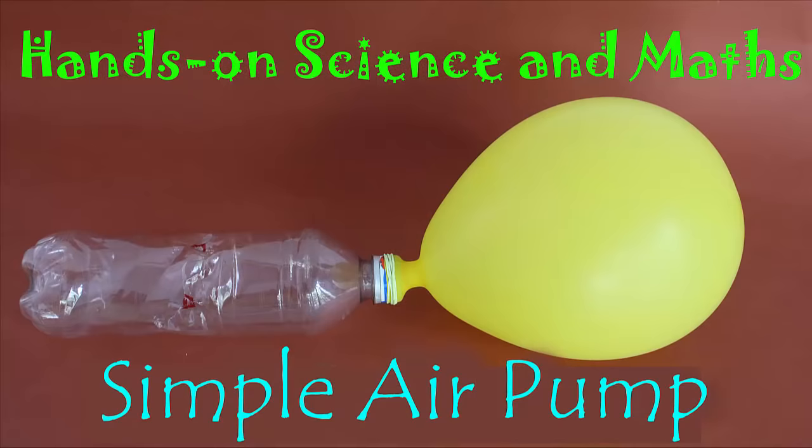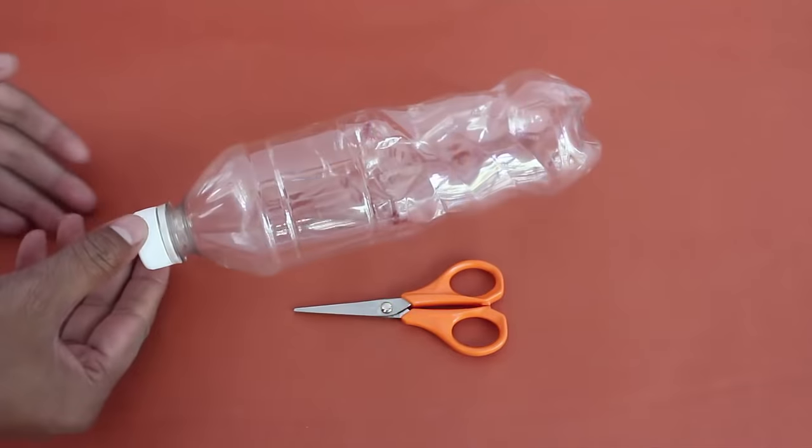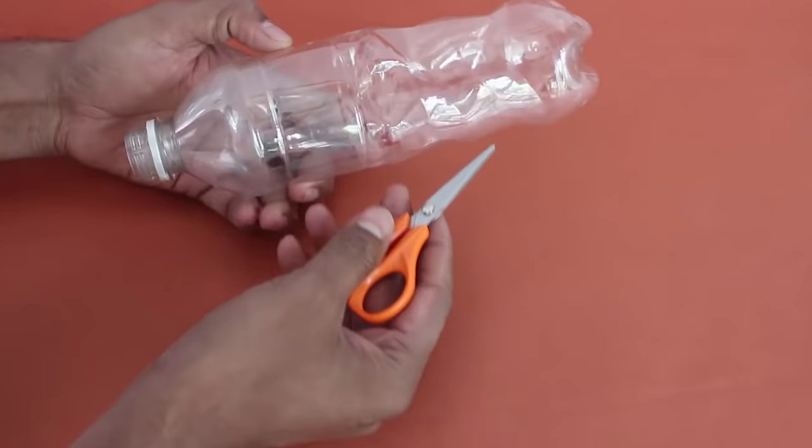This is perhaps the simplest and most efficient air pump in the world. With this pump you can inflate a balloon with air. To make it you need a one liter empty plastic bottle, two balloons (one big, one small), scissors and tape.